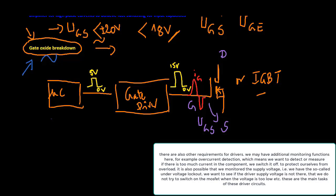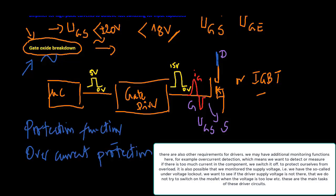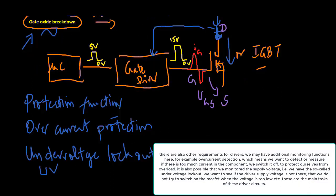There are also other requirements for drivers. We may have additional monitoring functions, for example over-current detection, which means we want to detect or measure if there is too much current in the component and switch it off to protect ourselves from overload. It is also possible that we monitor the supply voltage - that is, we have the so-called under-voltage lockout. We want to see if the driver supply voltage is not there, that we do not try to switch on the MOSFET when the voltage is too low. These are the main tasks of these driver circuits.